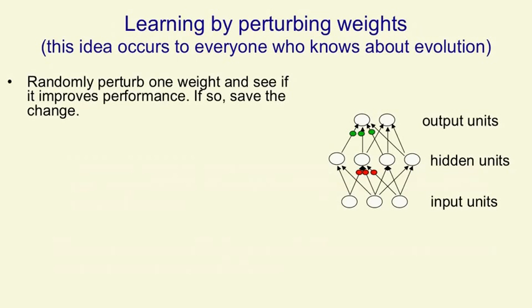The thing that occurs to everybody who knows about evolution is to learn by perturbing the weights. You randomly perturb one weight — that's meant to be like a mutation — and you see if it improves performance. If it improves the performance of the net, you save that change in the weight. You can think of this as a form of reinforcement learning: your action consists of making a small change, and then you check whether that pays off, and if it does, you decide to perform that action.